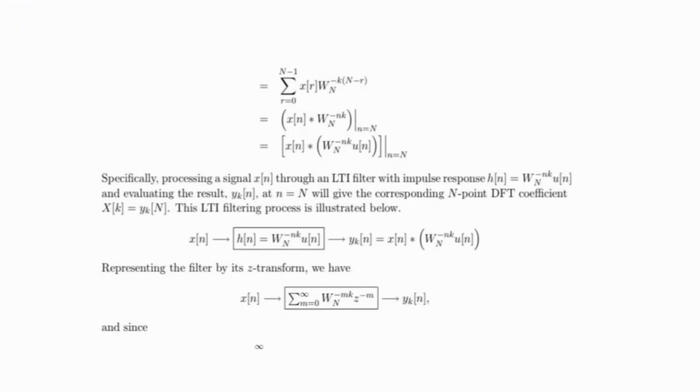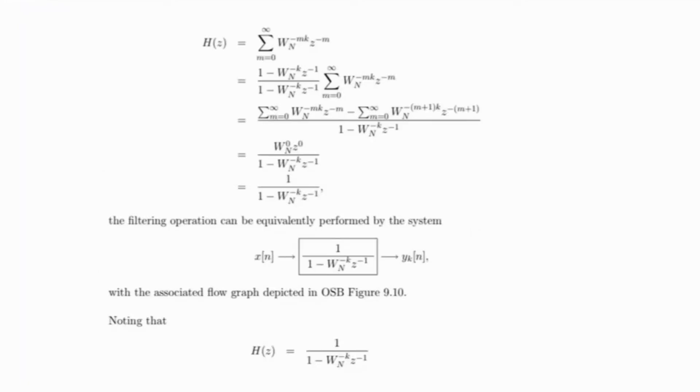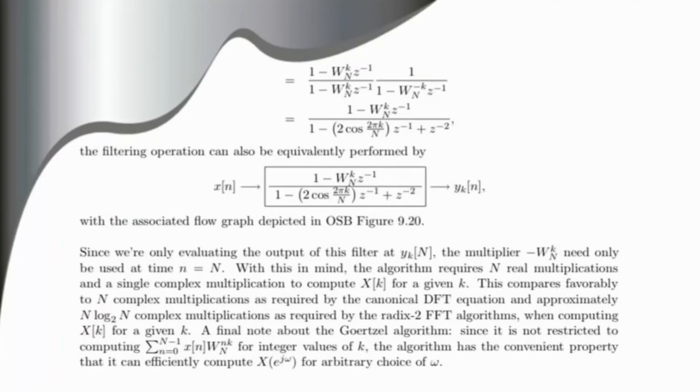Representing the filter by its Z-transform, the filtering operation can be equivalently performed by the associated flow graph depicted in OSB Figure 9.20. Since we're only evaluating the output of this filter at y_k(N), the multiplier -W_k^2 need only be used at time n = N.